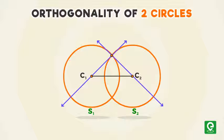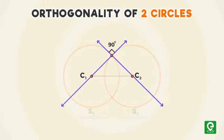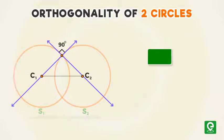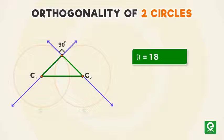Now let us understand the concept of orthogonality of two intersecting circles. Two circles are said to be orthogonal if they intersect each other orthogonally, that is the angle between the curves at the point of intersection is 90 degrees or the angle between the tangents at that point is 90 degrees.